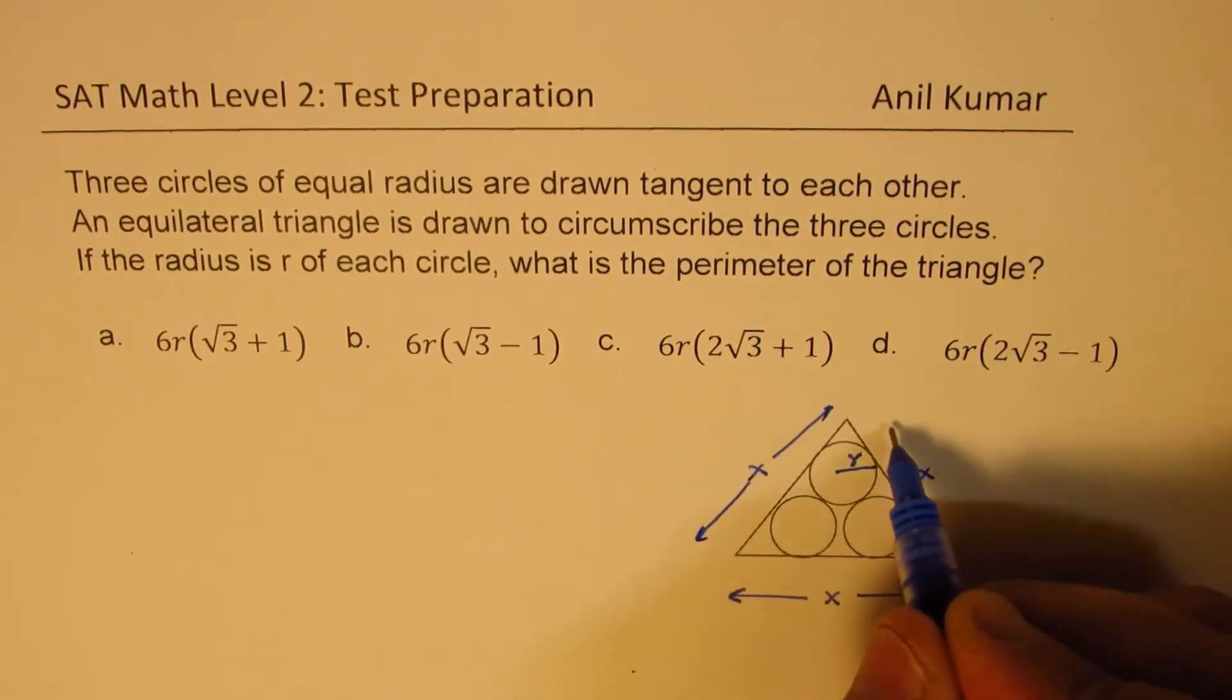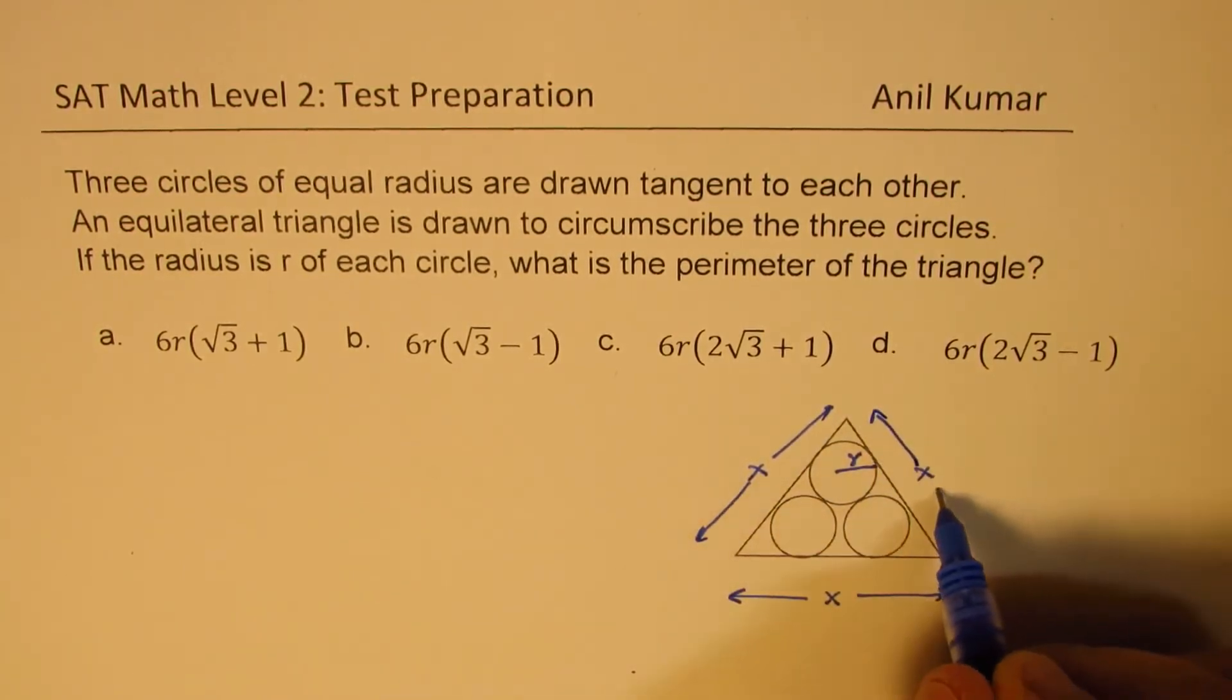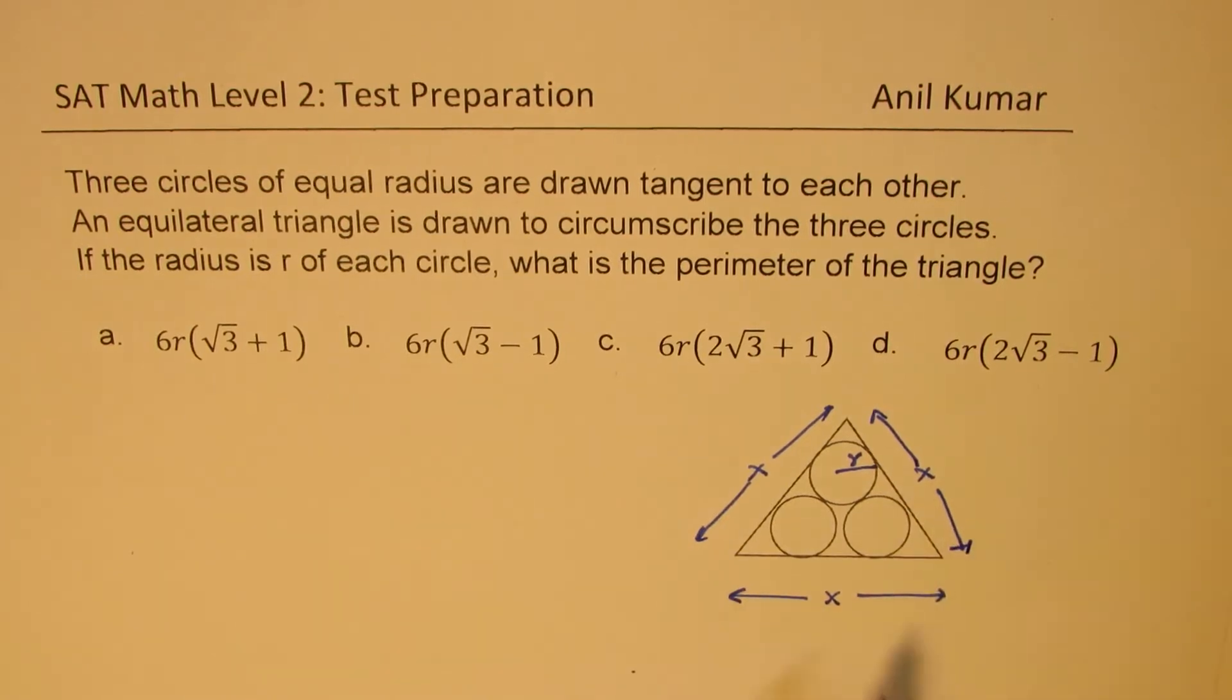You need to add them up, three times X, which will give you the perimeter. That's the question for you. You can pause the video, answer the question, and then look into my suggestions.